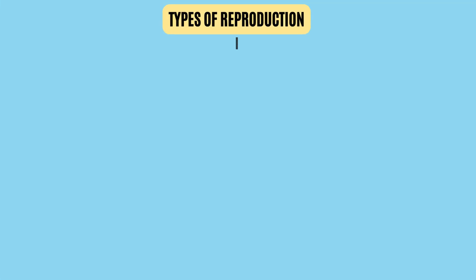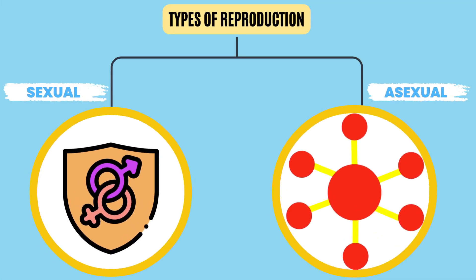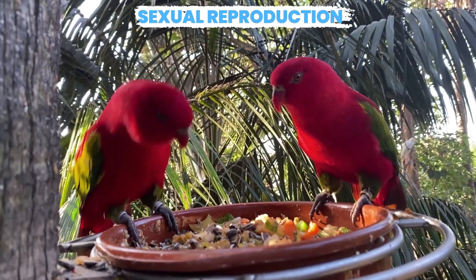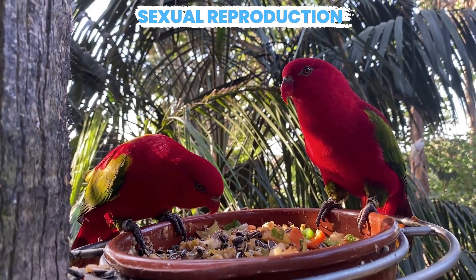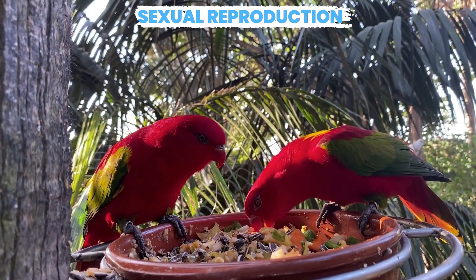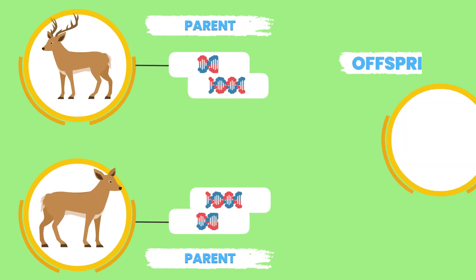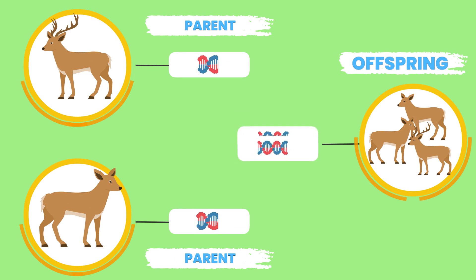In nature, there are two types of reproduction: sexual and asexual. In sexual reproduction, a male and female organism from the same species mate to produce an offspring. During sexual reproduction, half of each parent's DNA is passed on to the offspring.